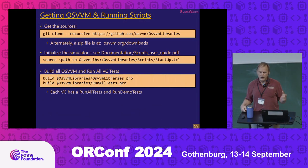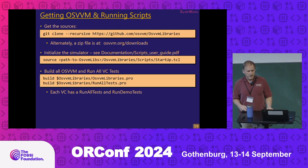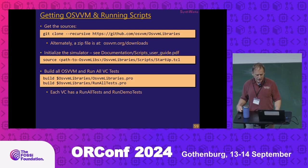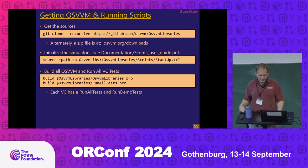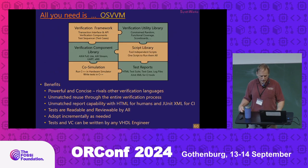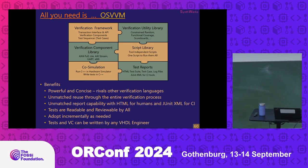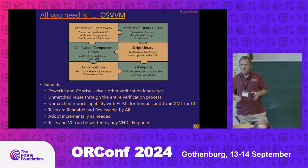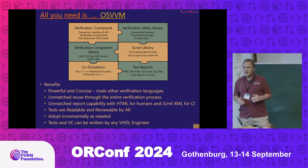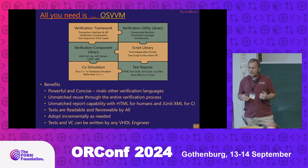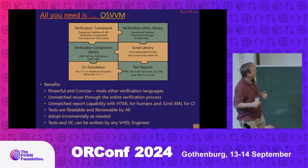OSVVM is on GitHub — you can grab it by cloning, but it has submodules so you've got to use recursive clone. You can also get a zip file on osvvm.org. OSVVM really brings VHDL verification down to the level that any VHDL engineer can do it, and that's one of the important things here.